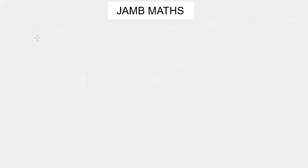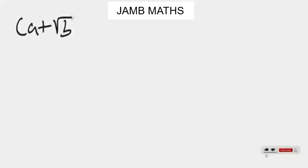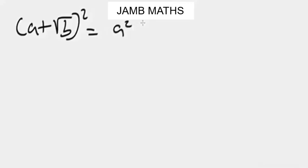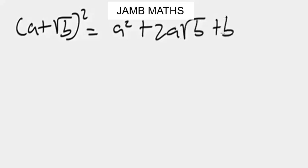Now let's look at the fourth rule. This one is a bit tricky, but I'm going to simplify and break it down. We have something like bracket a plus square root of b, all squared. This is the same as a squared plus two a square root of b plus b.